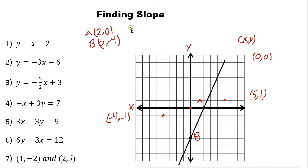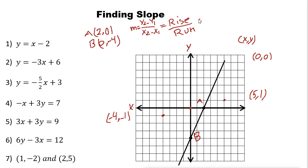Now that we have two points, we can find the slope using the formula: slope = (Y2 − Y1) / (X2 − X1), also known as rise over run. Run is how many units you go to the right — here it is 2. Rise is how many units you go up — here it is 4. So the slope is 4 over 2, which equals 2.